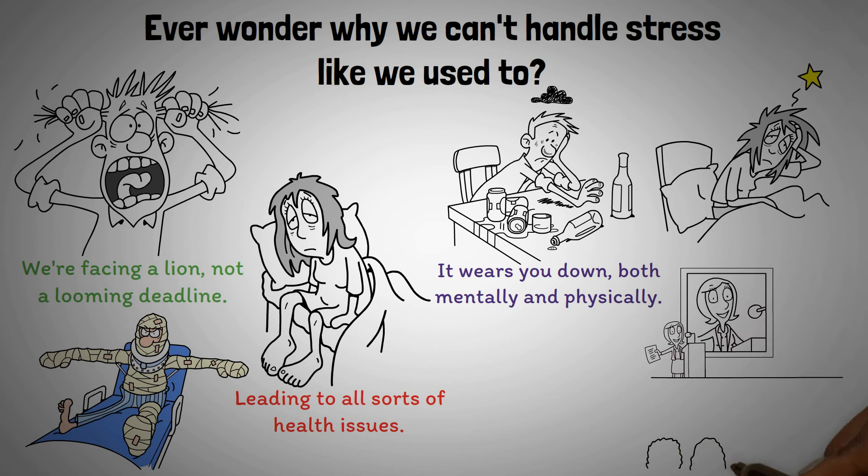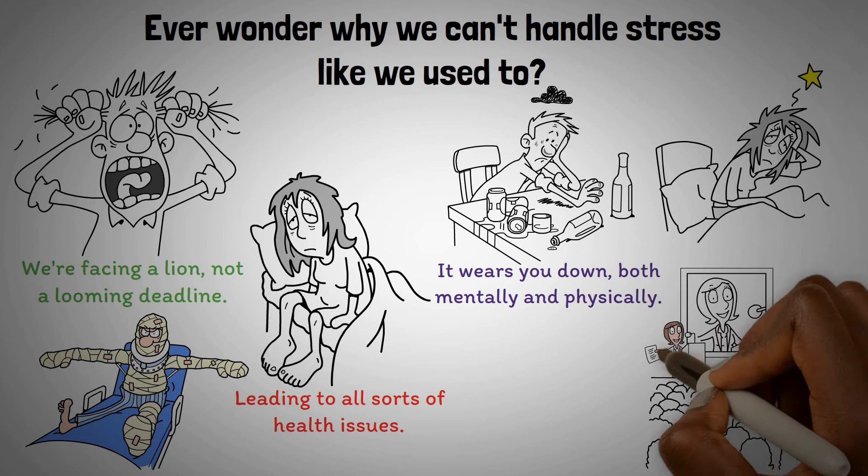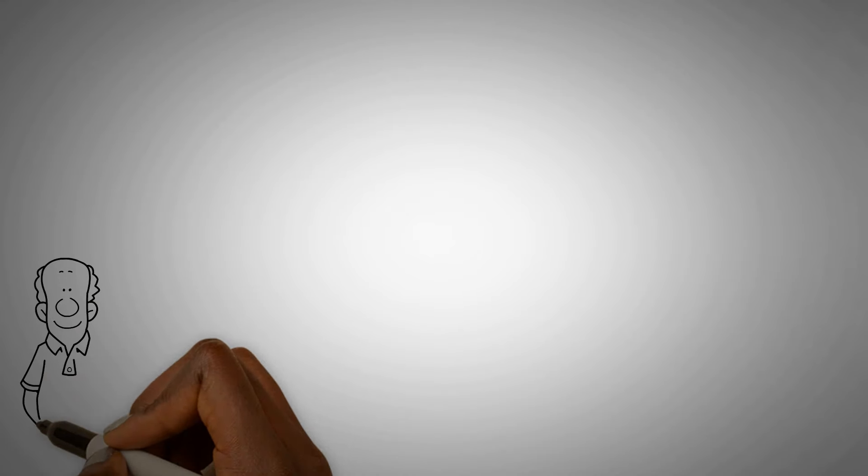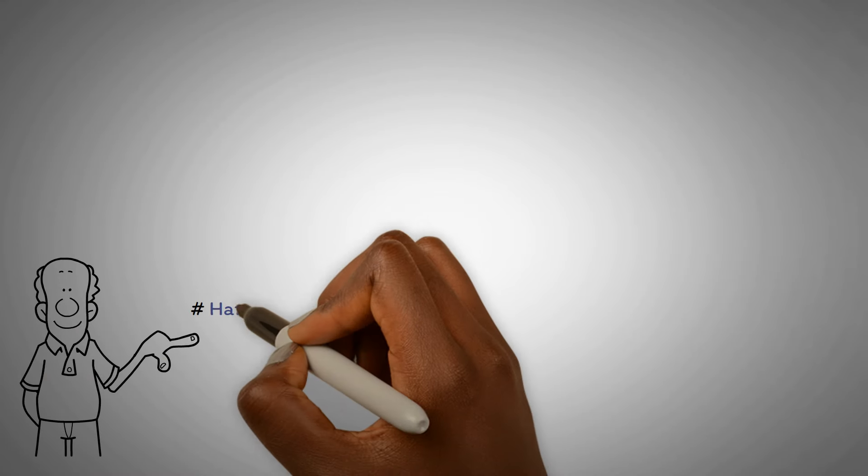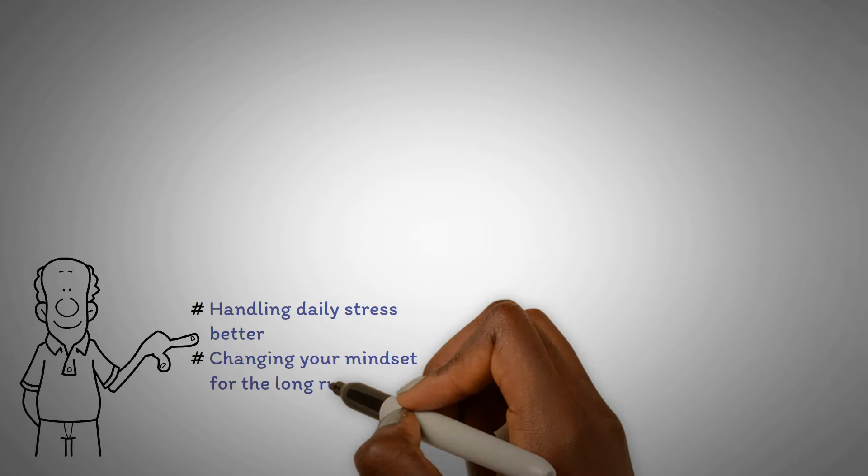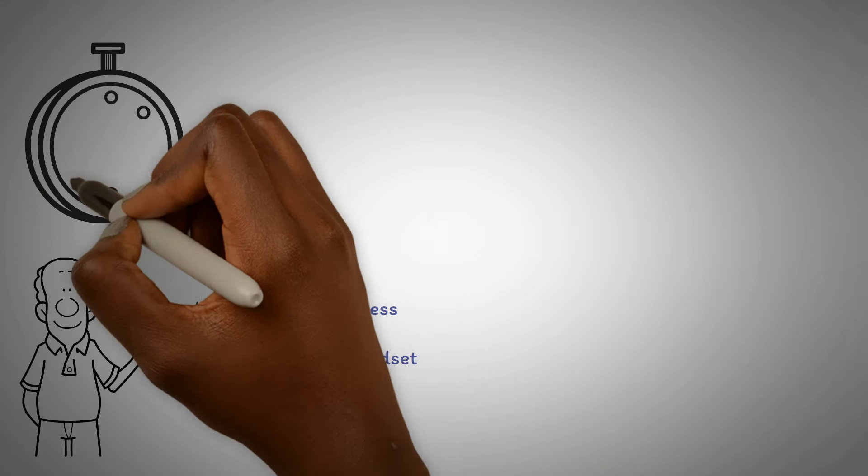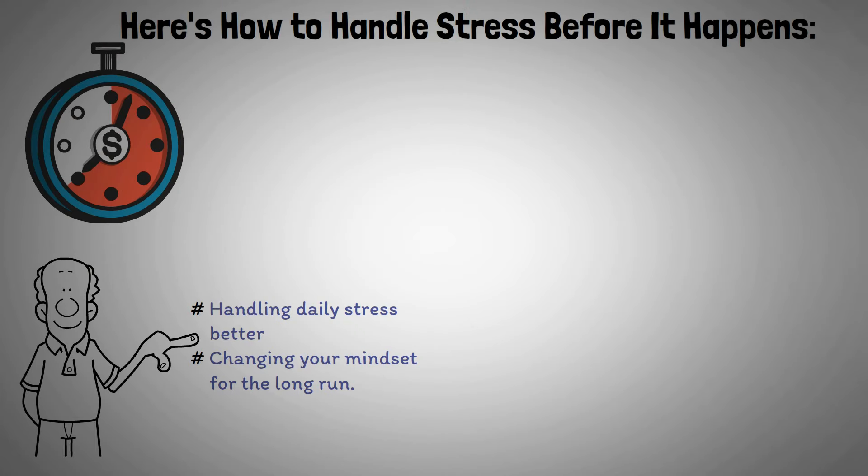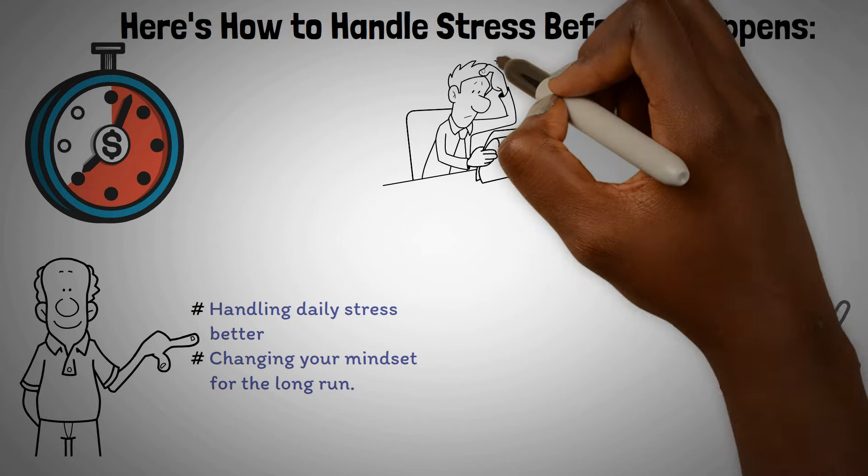Next, let's explore ways you can manage stress before, during, and after it happens with various research-based techniques. Nick Trenton shows two ways to beat overthinking, handling daily stress better and changing your mindset for the long run. Let's start with stress management. Here's how to handle stress before it happens. You can't change your genes or surroundings, but you can choose how you react to stress.